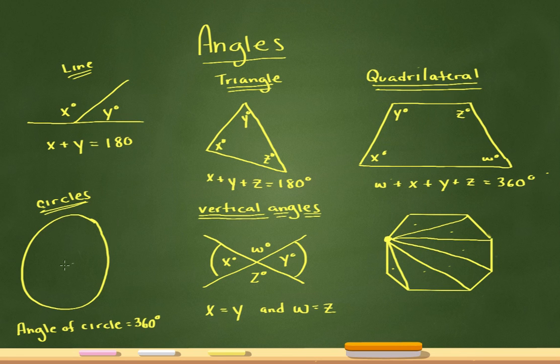Now let's go to circles. The angle of a circle, so basically, starting at one point and going all the way around, is an angle of 360. So that's circles.